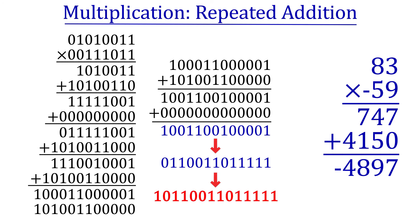If we math this number out, we find that this is the two's complement binary number negative 4,897, which is the product of 83 and negative 59.